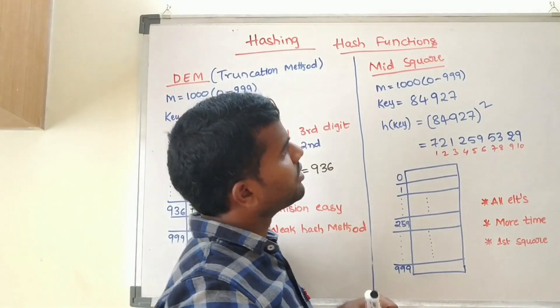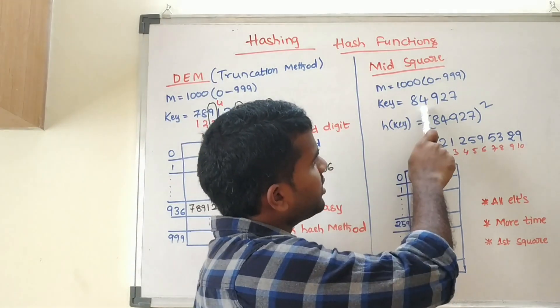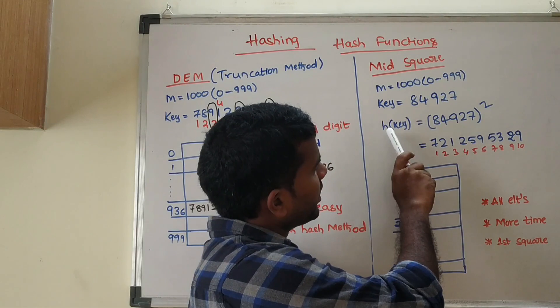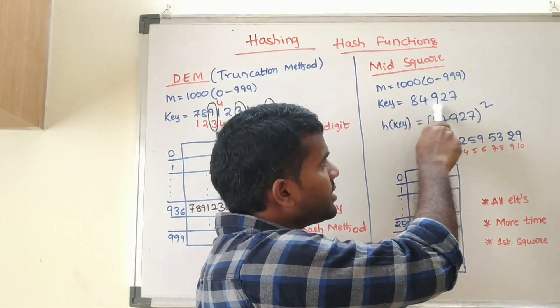Mid square method - same thing, we will take an example with thousand slots. The key is 84927, some large number. For h(key), first we have to square this key.